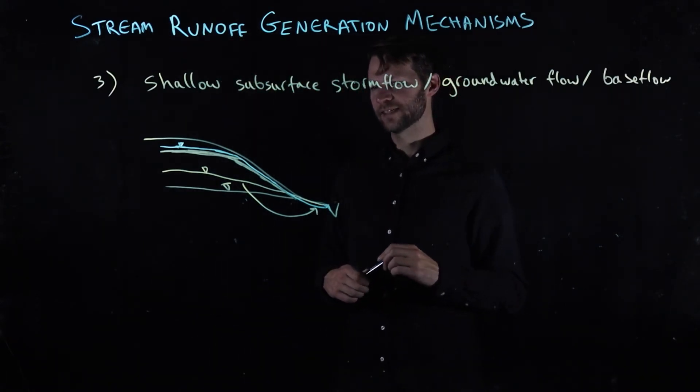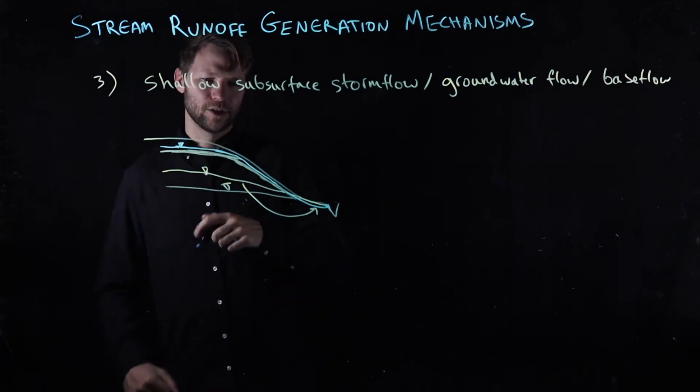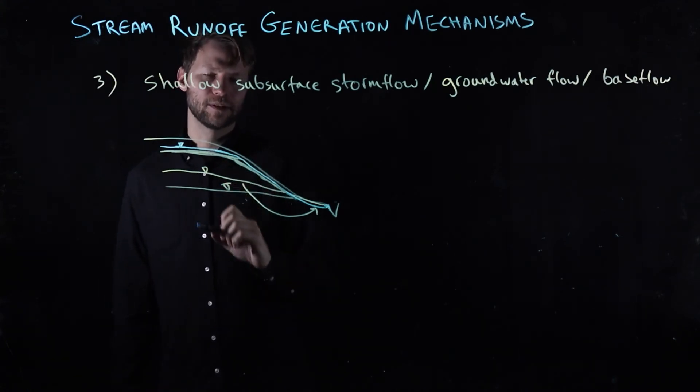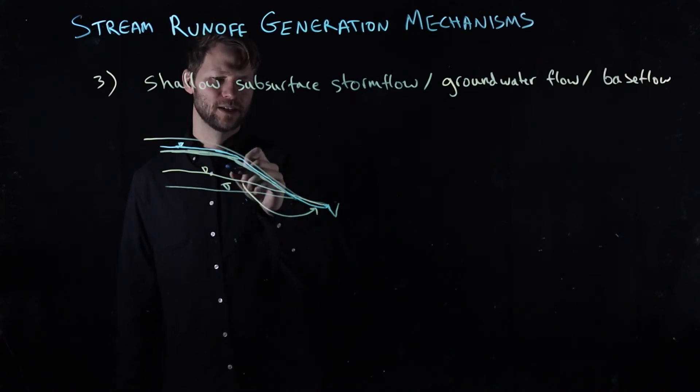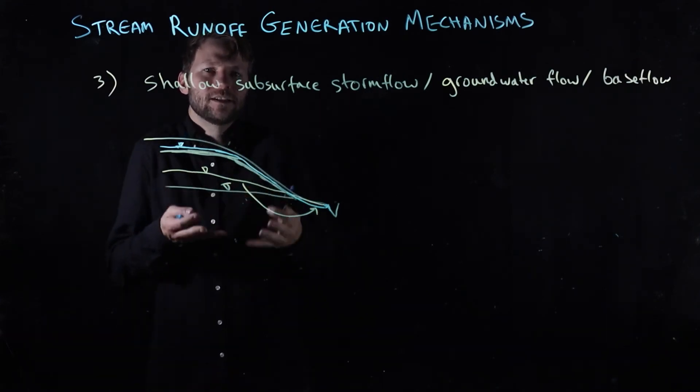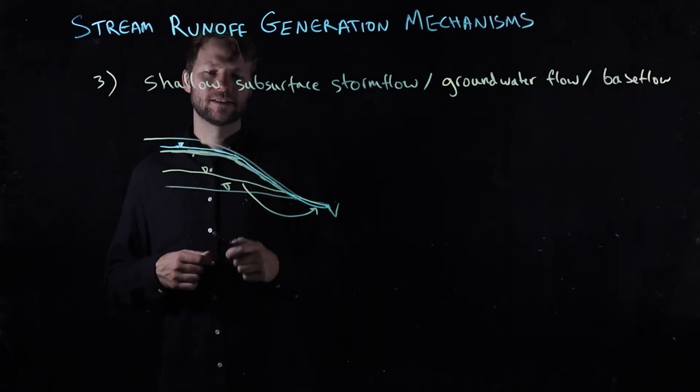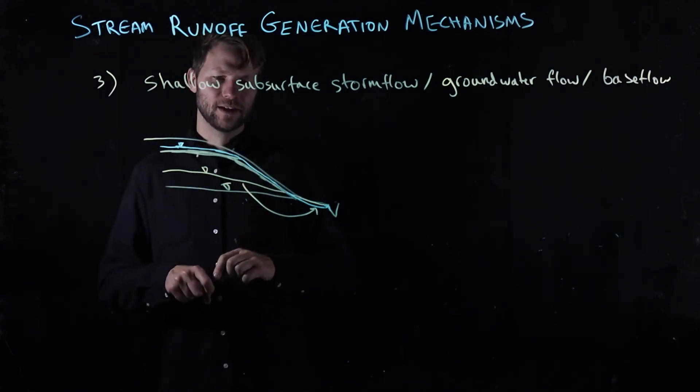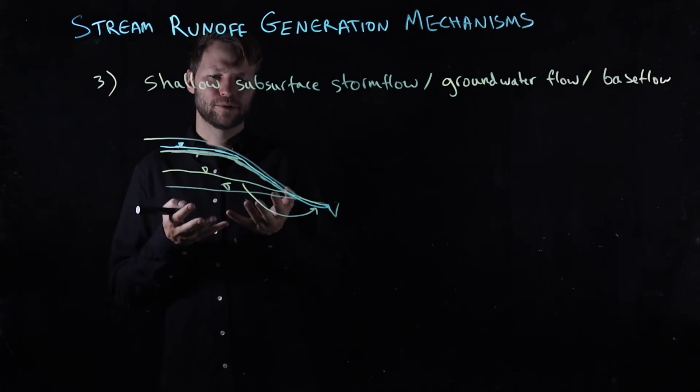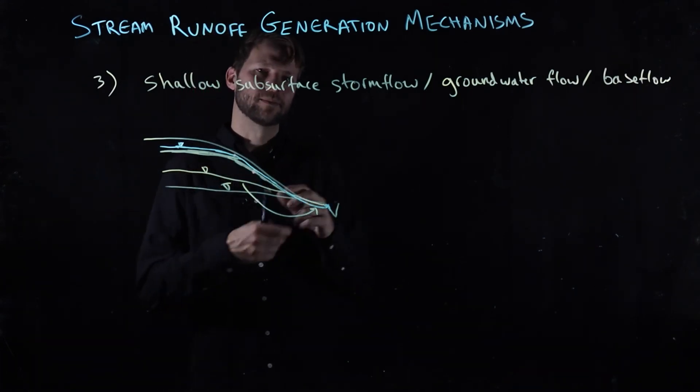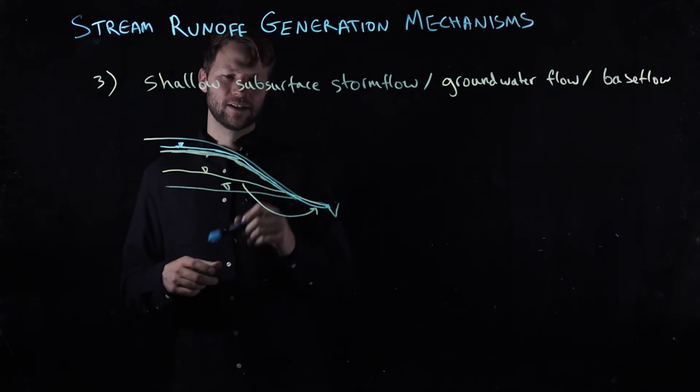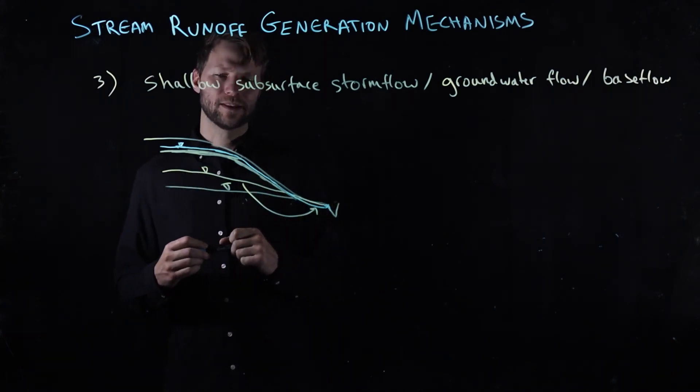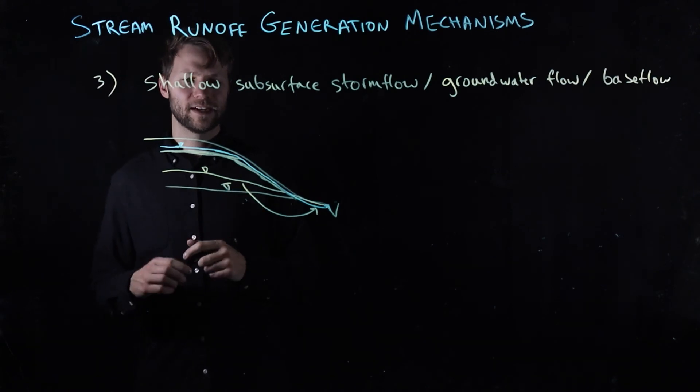There's a few different things that can go on. One is that you may have above the water table a fairly significant capillary fringe. It's tension saturated and just needs a little bit more water from vertical unsaturated flow to cause it to go to positive pressure and rapidly become groundwater flow. That's one example that you can trigger runoff generation really rapidly through this particular mechanism.